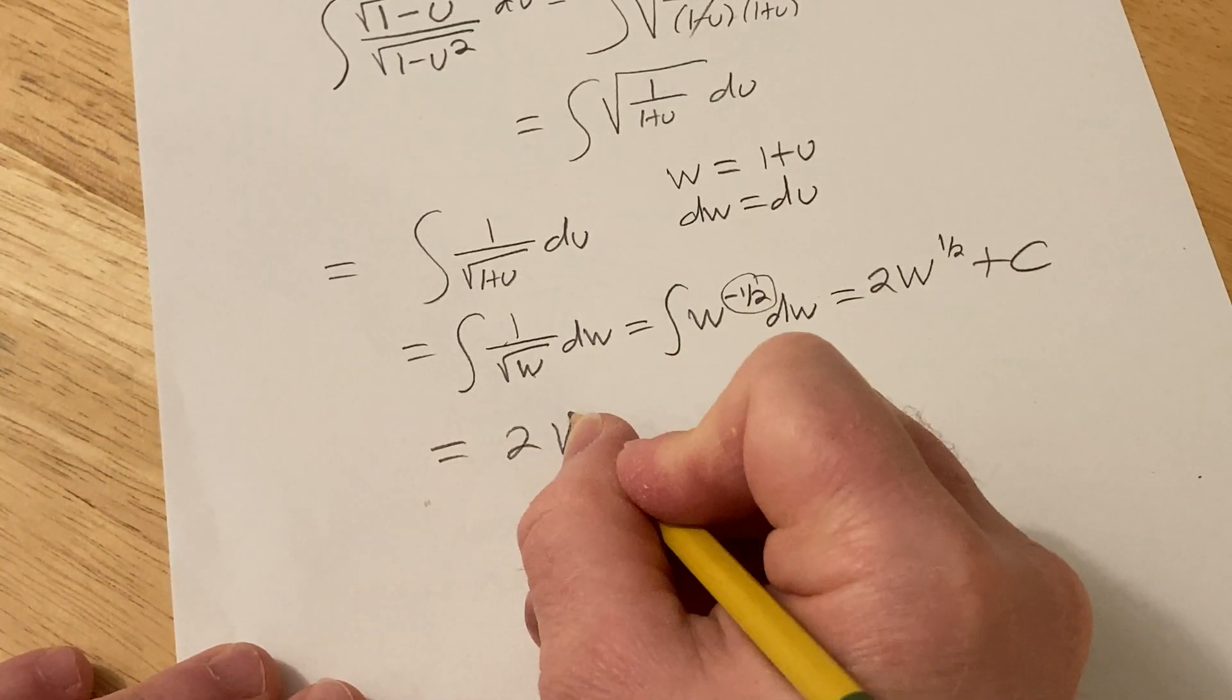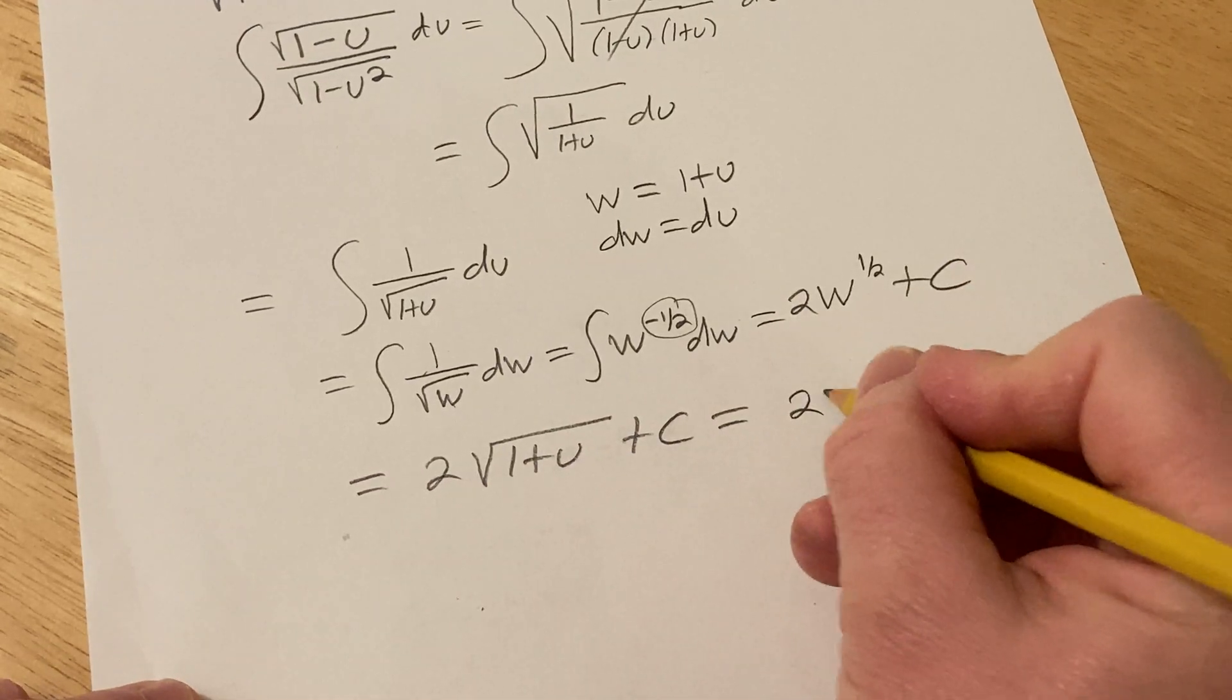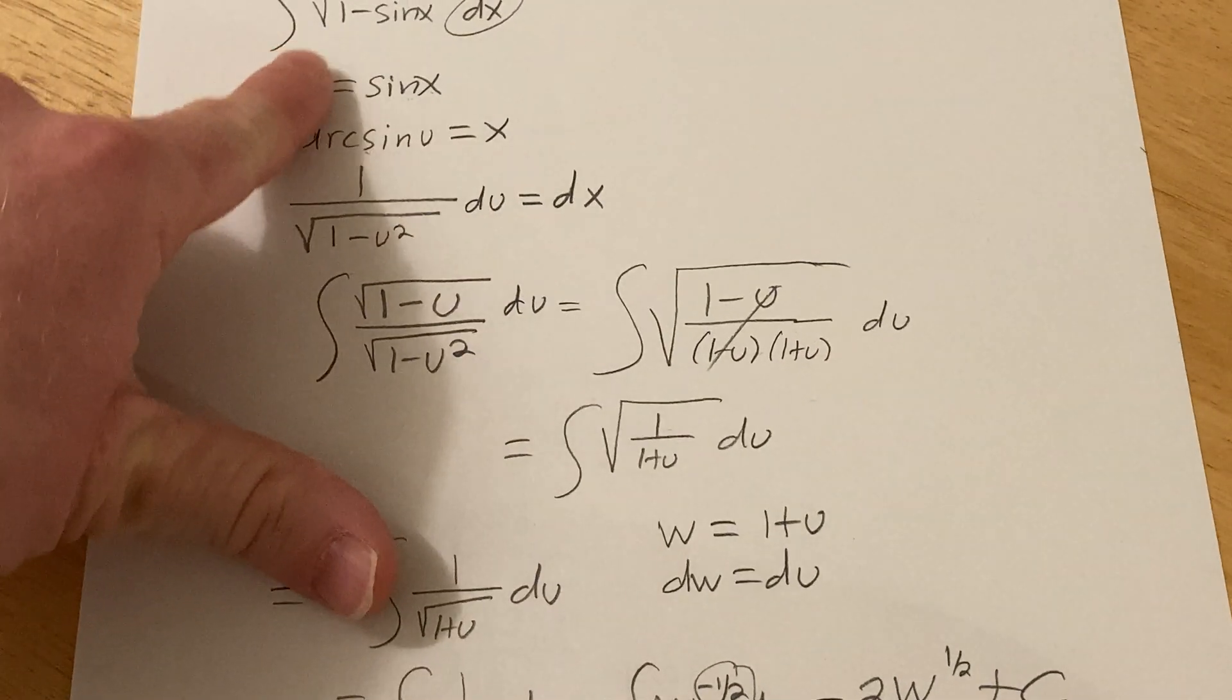So this is 2 square root of w, which is really 1 plus u, plus c, so this is 2 square root of 1 plus, and what was u, way back here it was sine x.